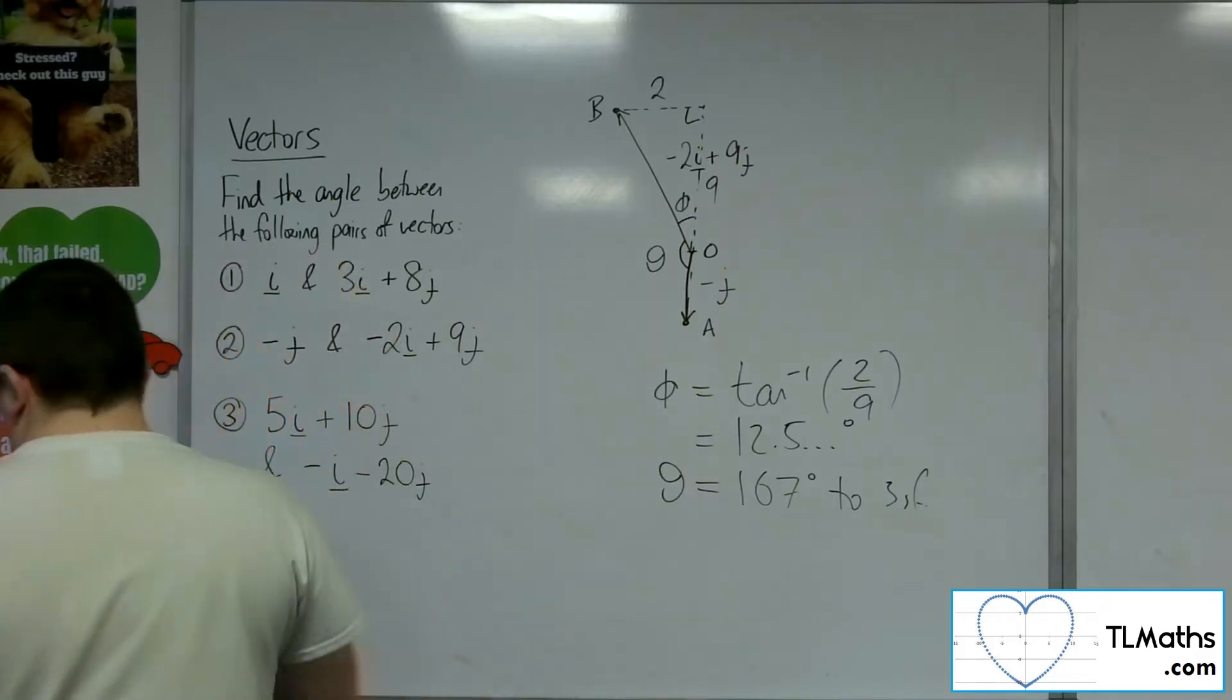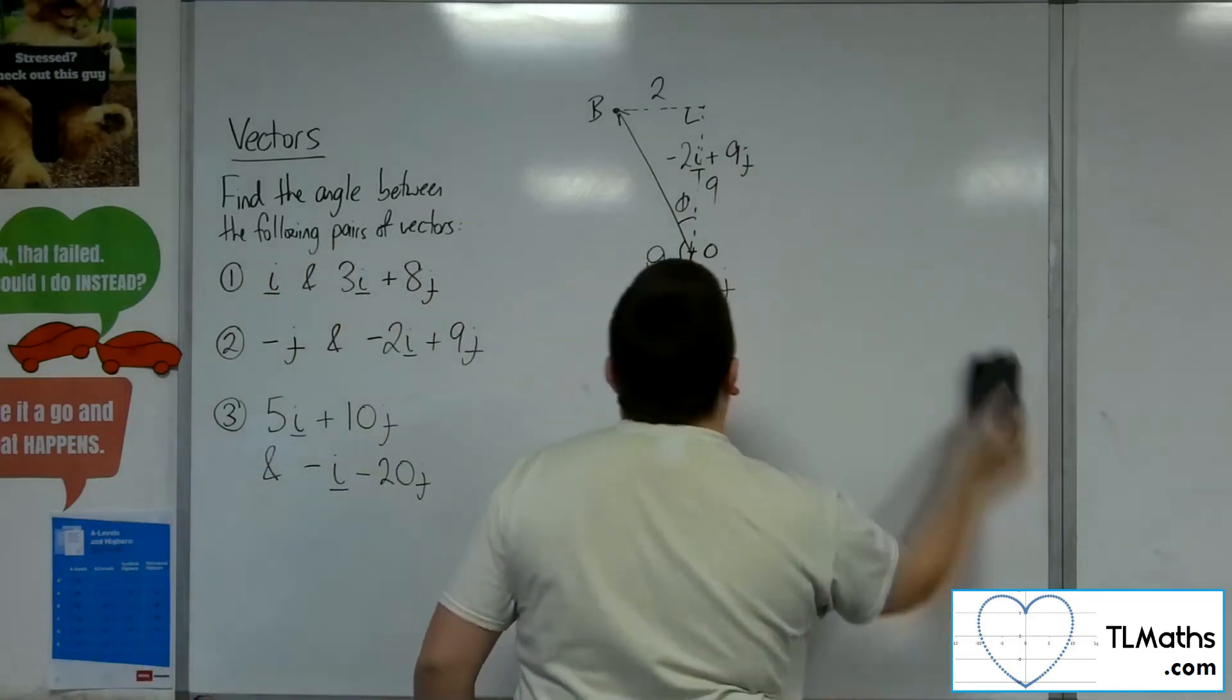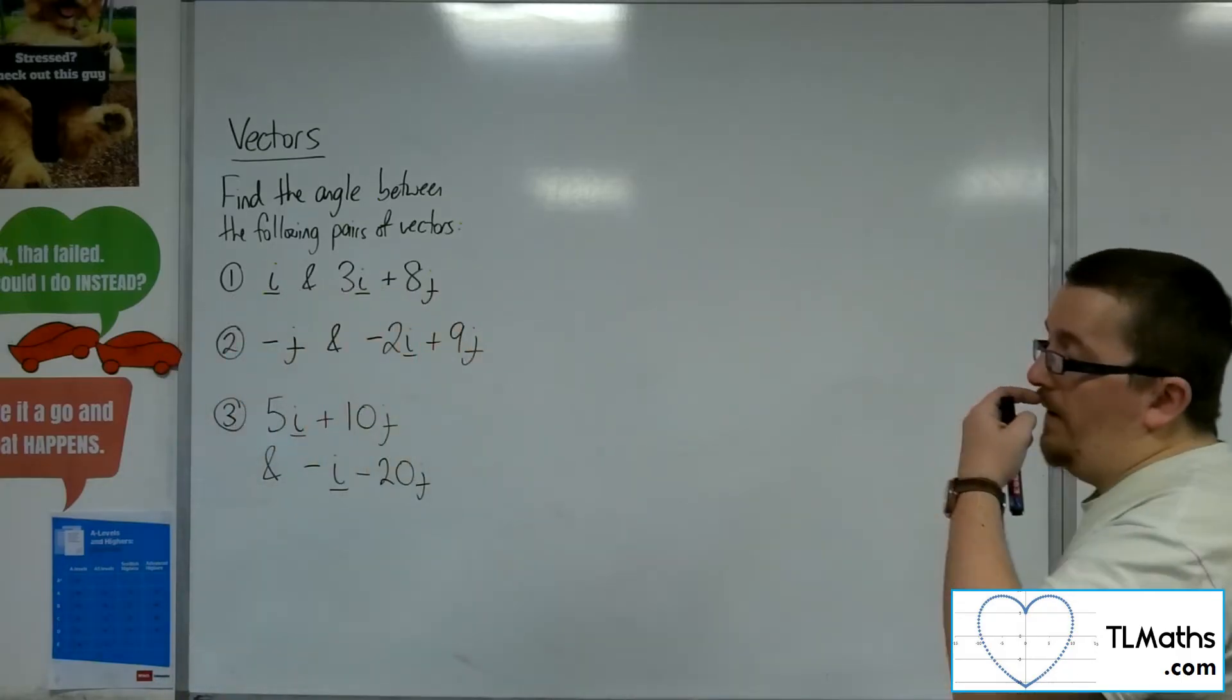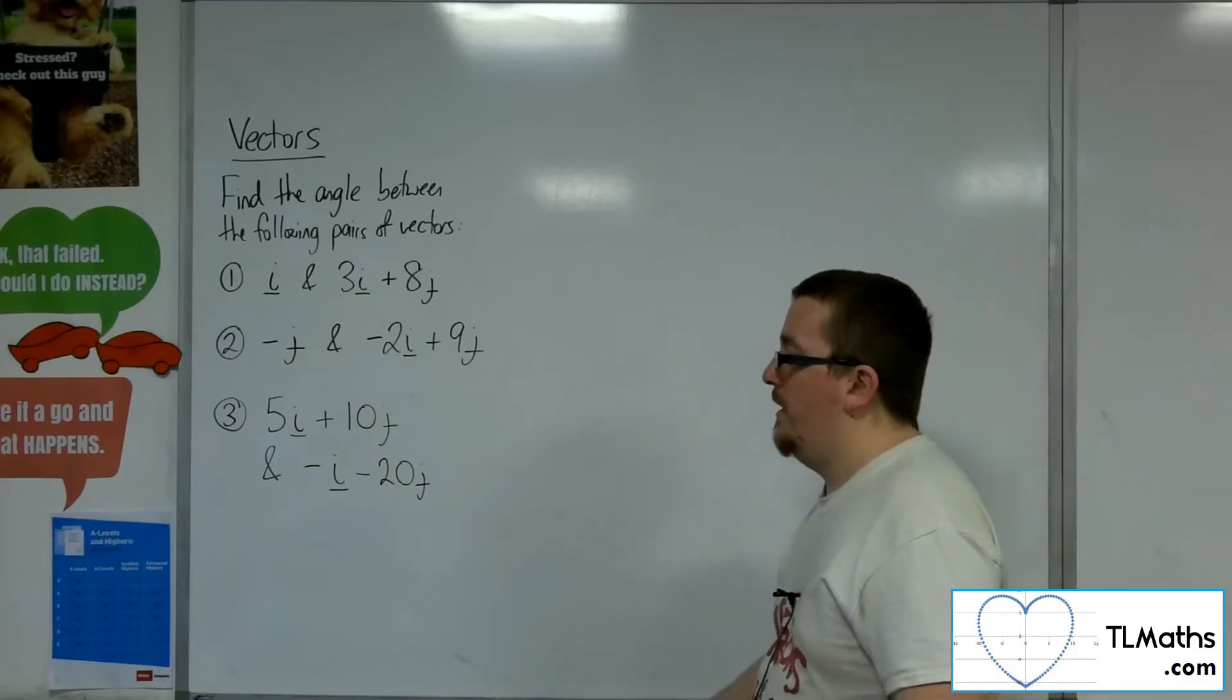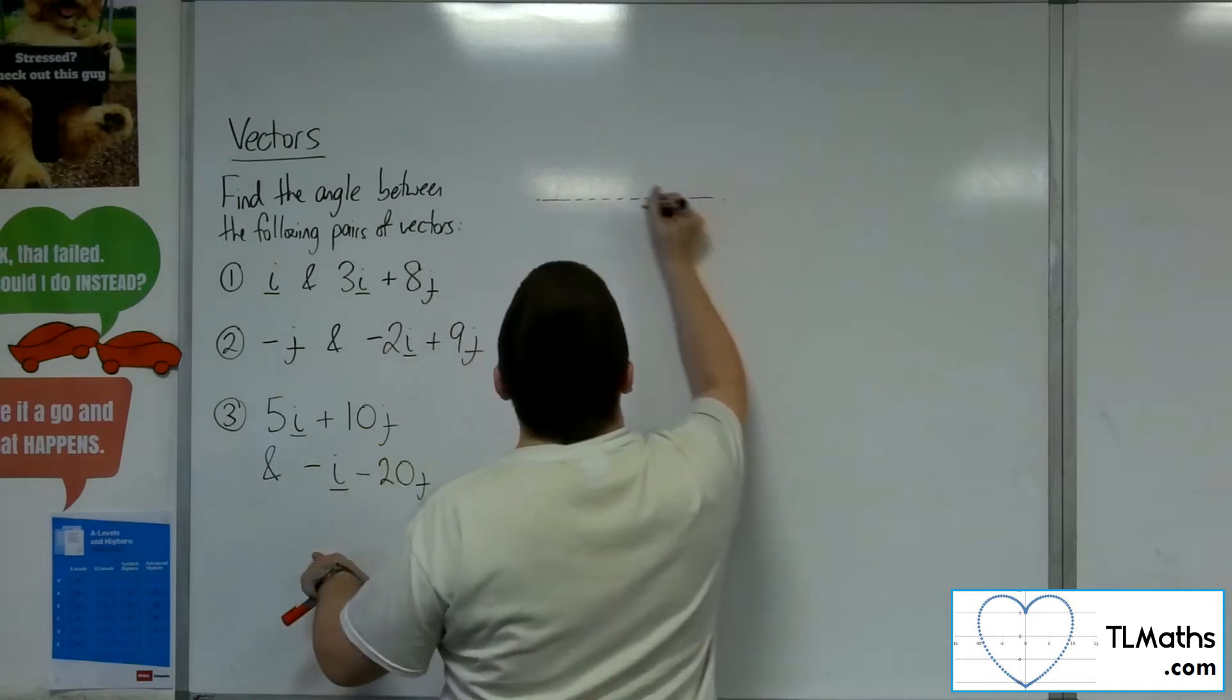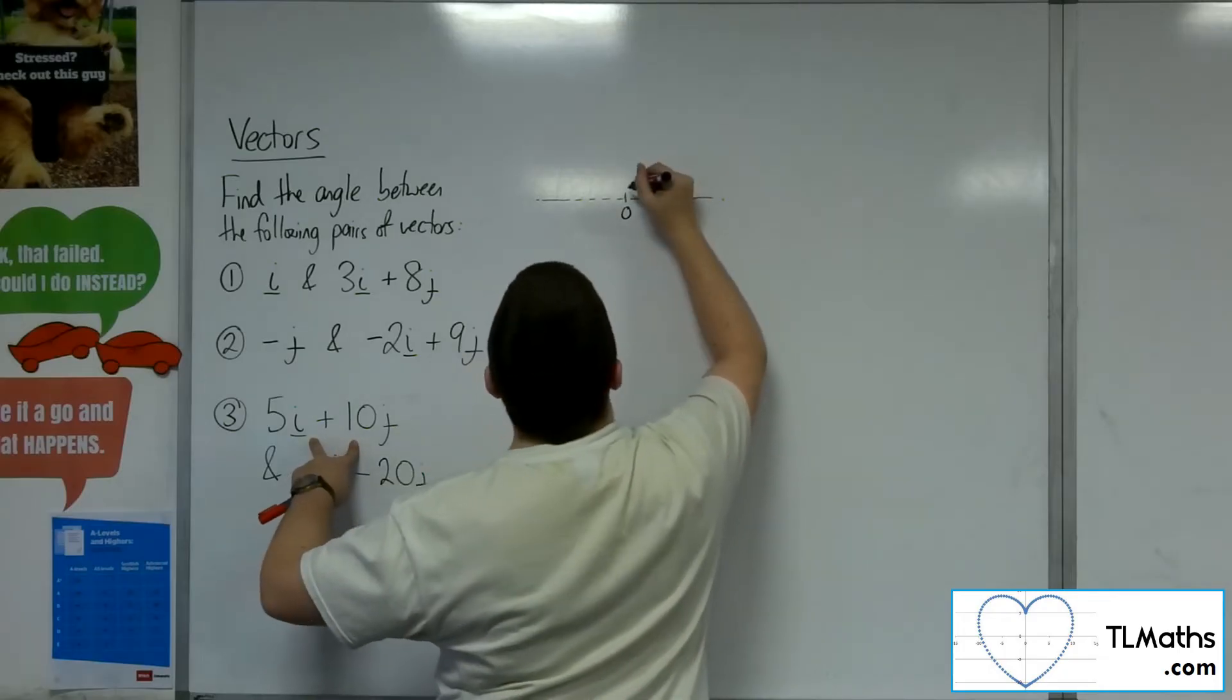Okay, so let's have a look at number 3. Now number 3, we've got 5i plus 10j and minus i minus 20j. So if I draw in an x-axis, here is the origin. 5i plus 10j.